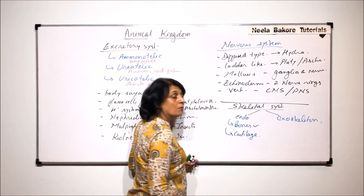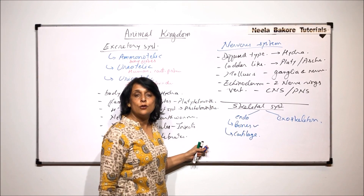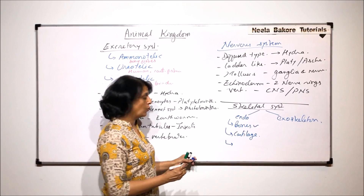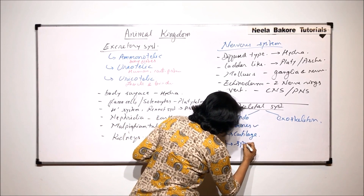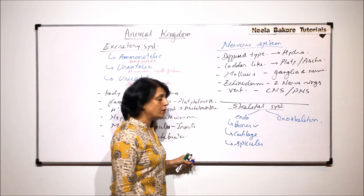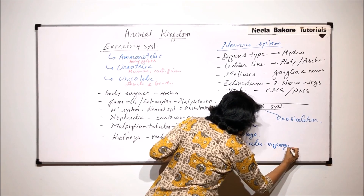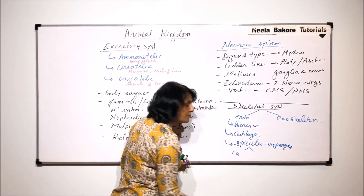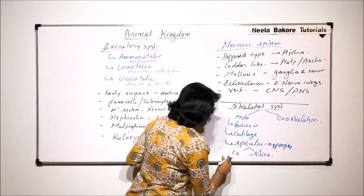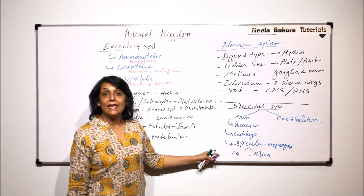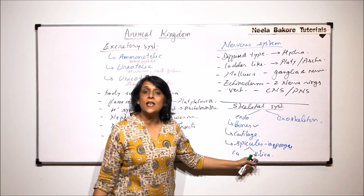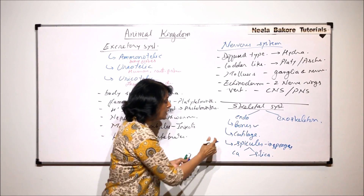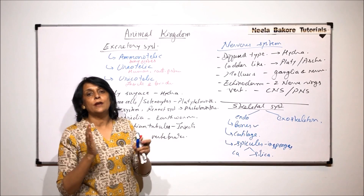Cartilage is also present as endoskeleton in the embryonic condition and is found in cartilaginous fishes. Another type of endoskeleton is spicules, found in sponges. Spicules can be made up of calcium salts — called calcareous spicules — or of silica. These structures are present inside the body of sponges, between the outer and inner layers.